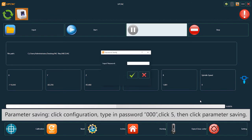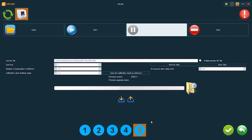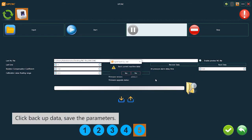Click configuration and type in password 000. Click 5, then click parameter saving. Click backup data and save the parameters.